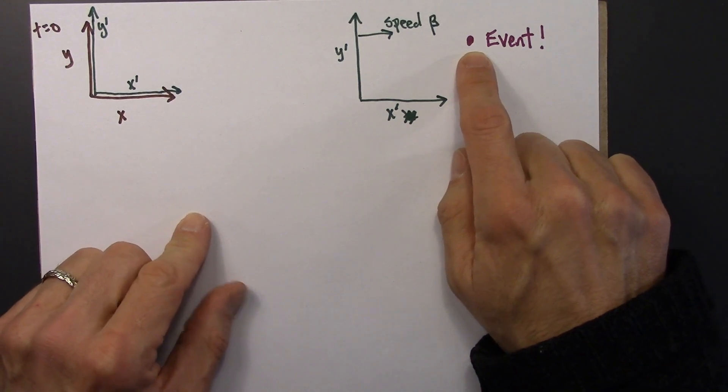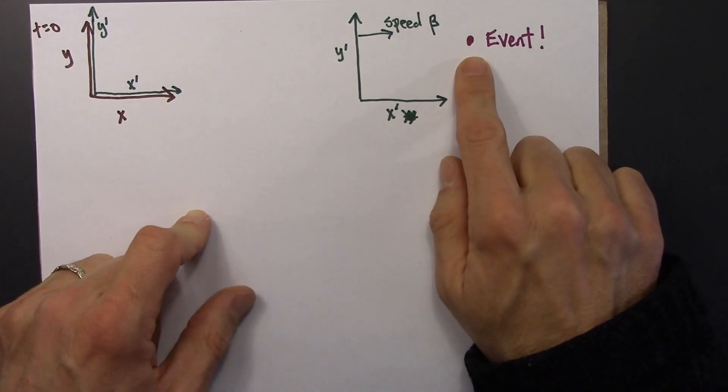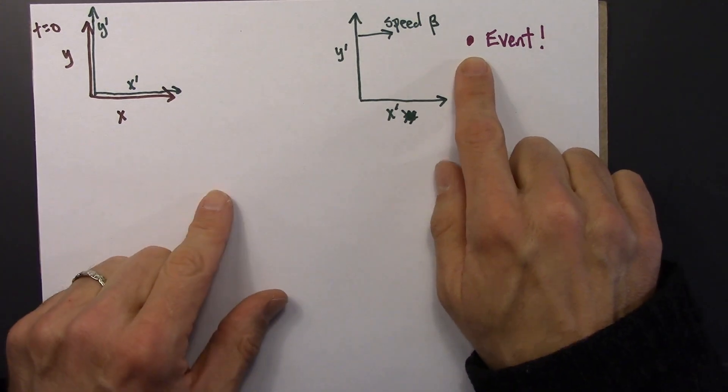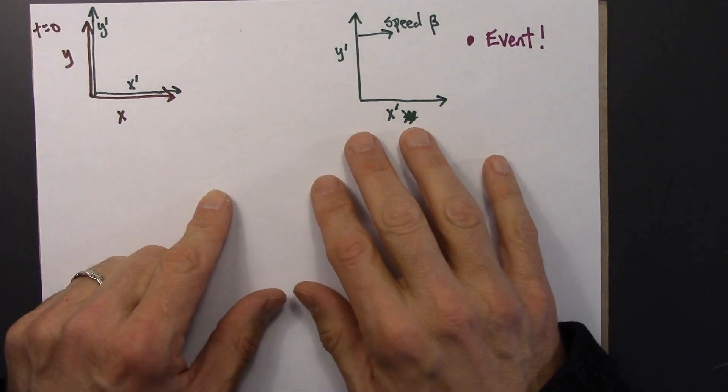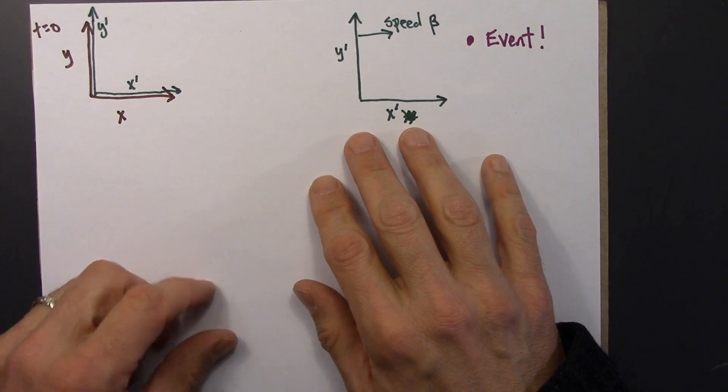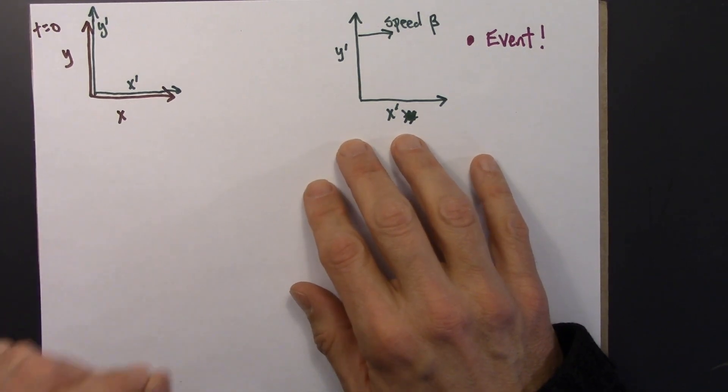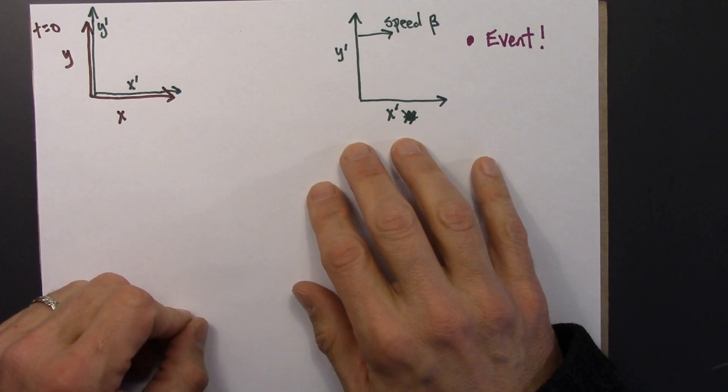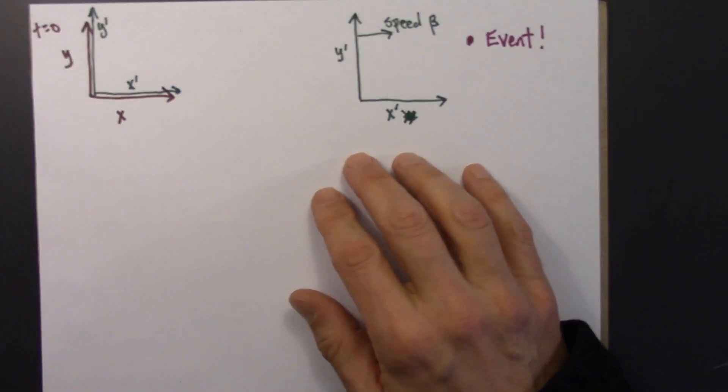Just because you're going fast or slow doesn't mean time is any different. Newton puts this in a quote that's cited very often. Newton says that time is absolute and flows equitably without regard to anything external. So time is time.